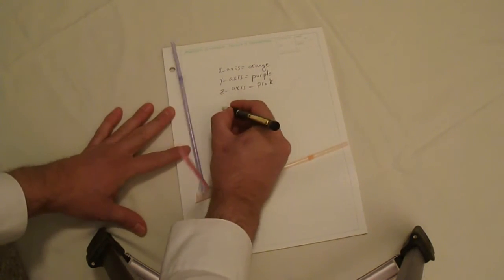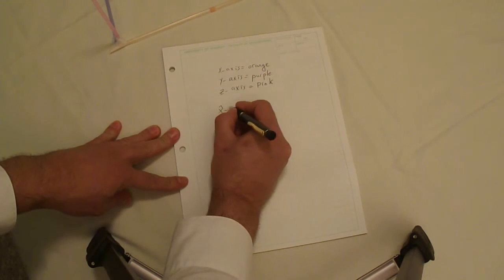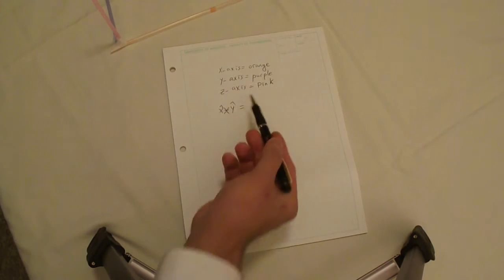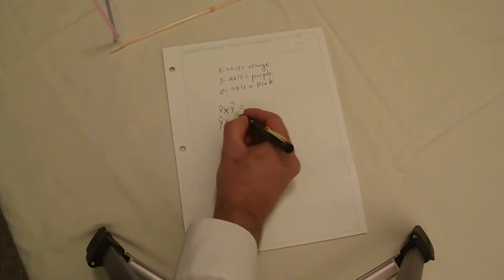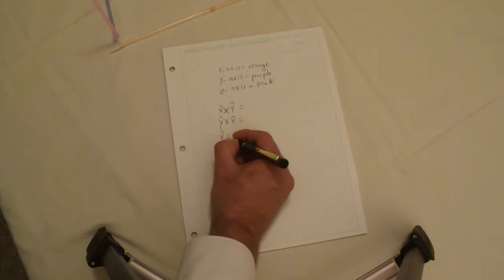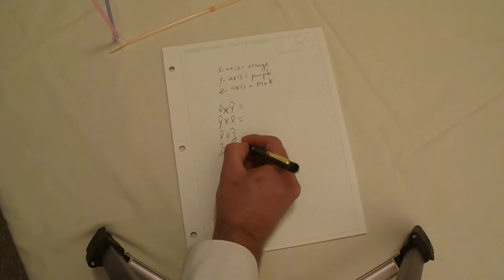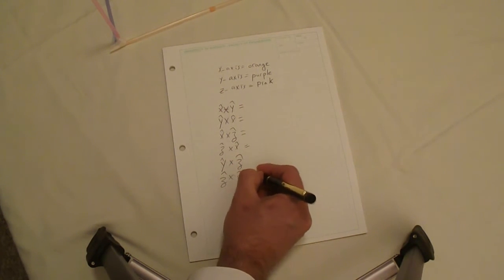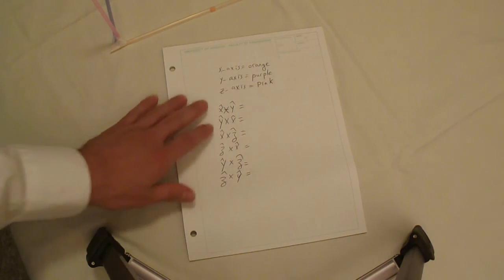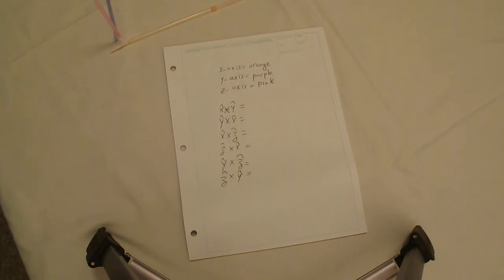All combinations: X cross Y, Y cross X, X cross Z, Z cross X, Y cross Z, Z cross Y. We need to know the direction of the result for each of these cross products. Now that we have all these combinations, let's start demonstrating.